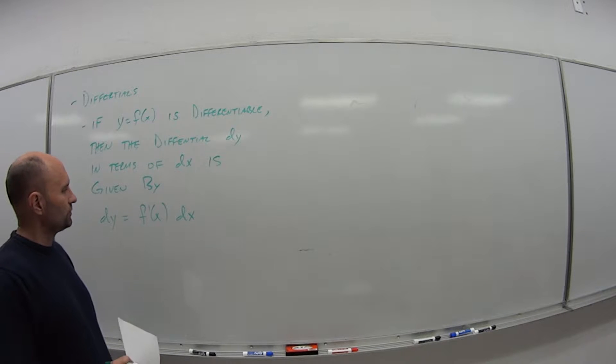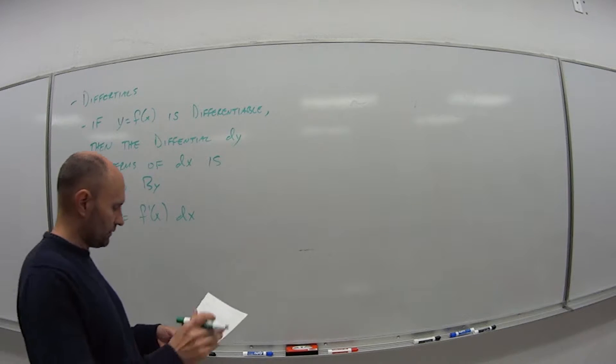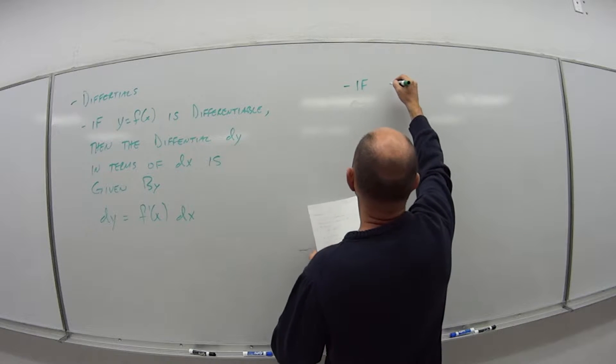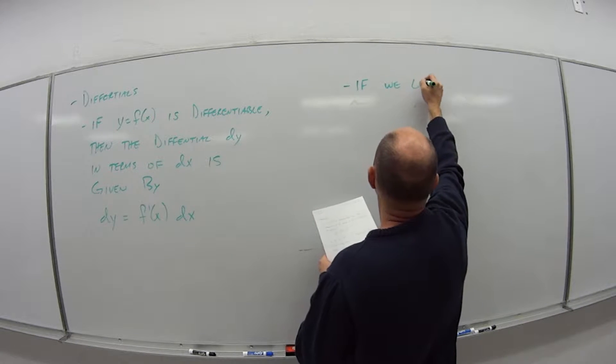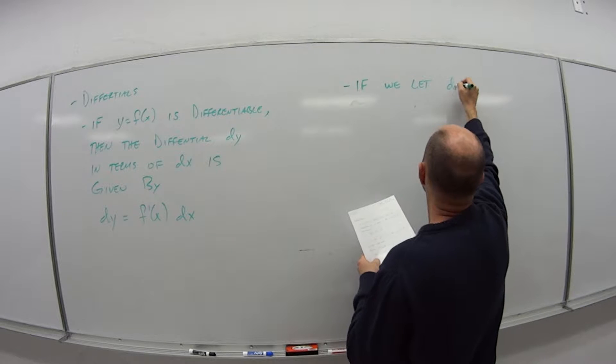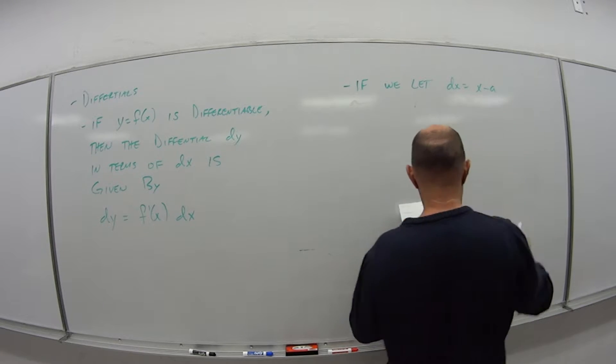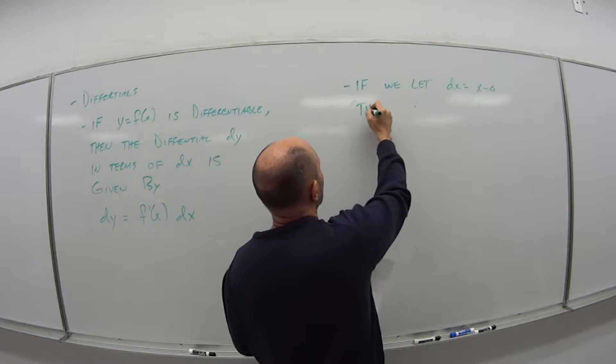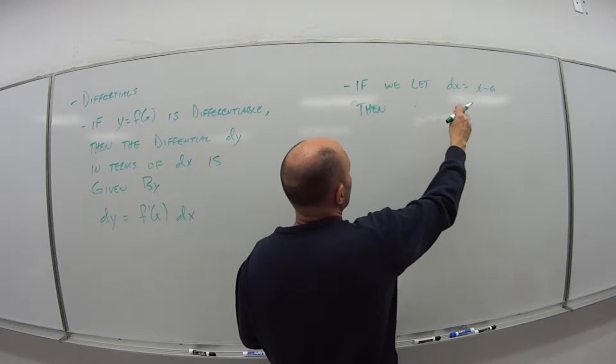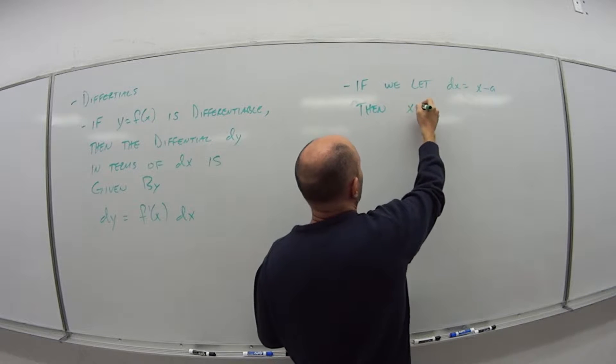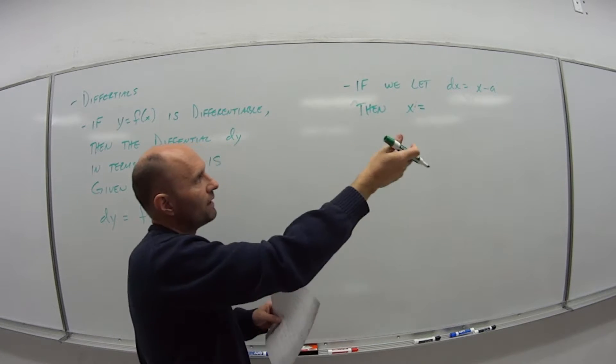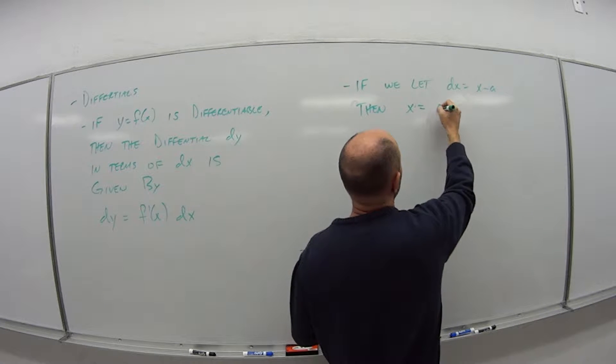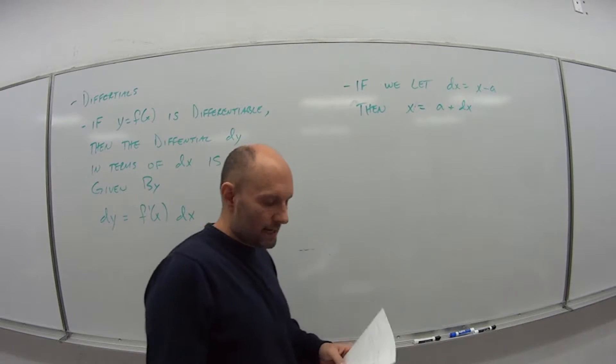So now we're going to do some substitutions, some algebra here. So if we let dx equal x minus a, then if we want to find out what's x all by itself, we have to add a to both sides. So that says that x is equal to a plus dx.